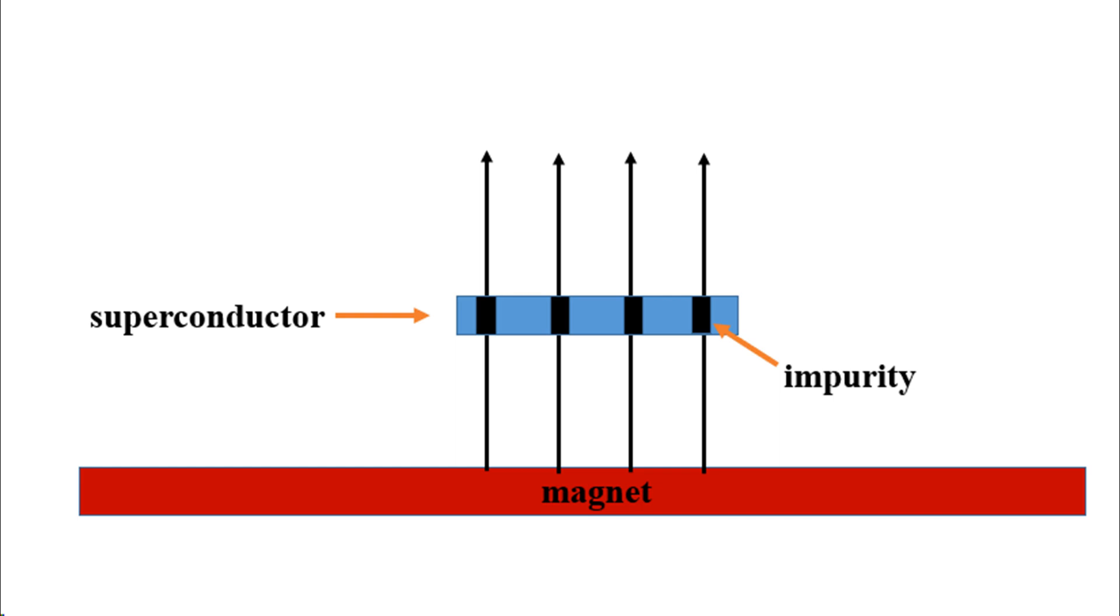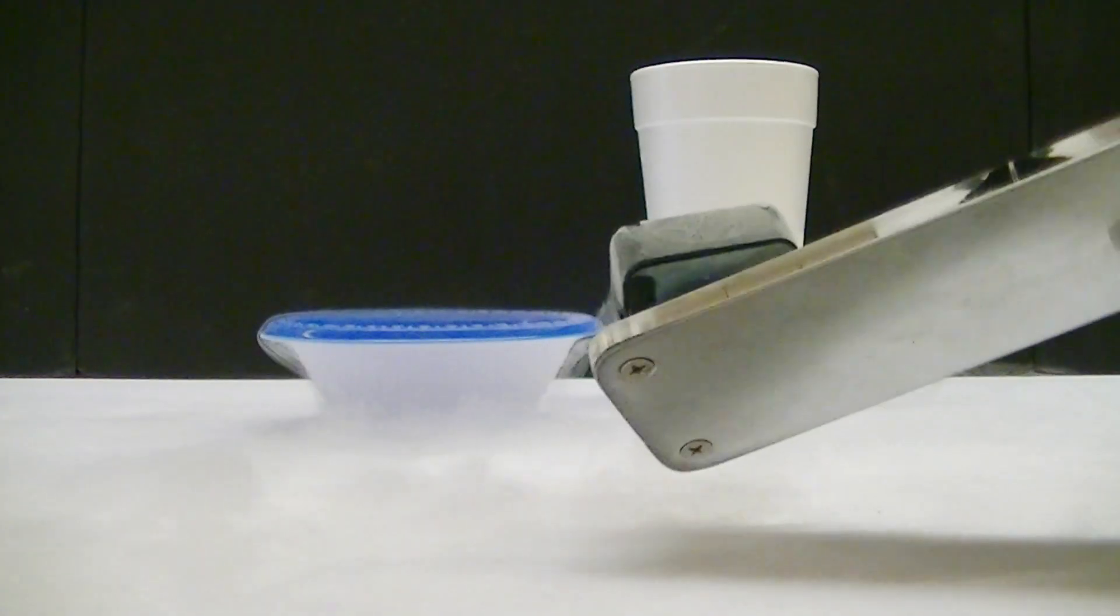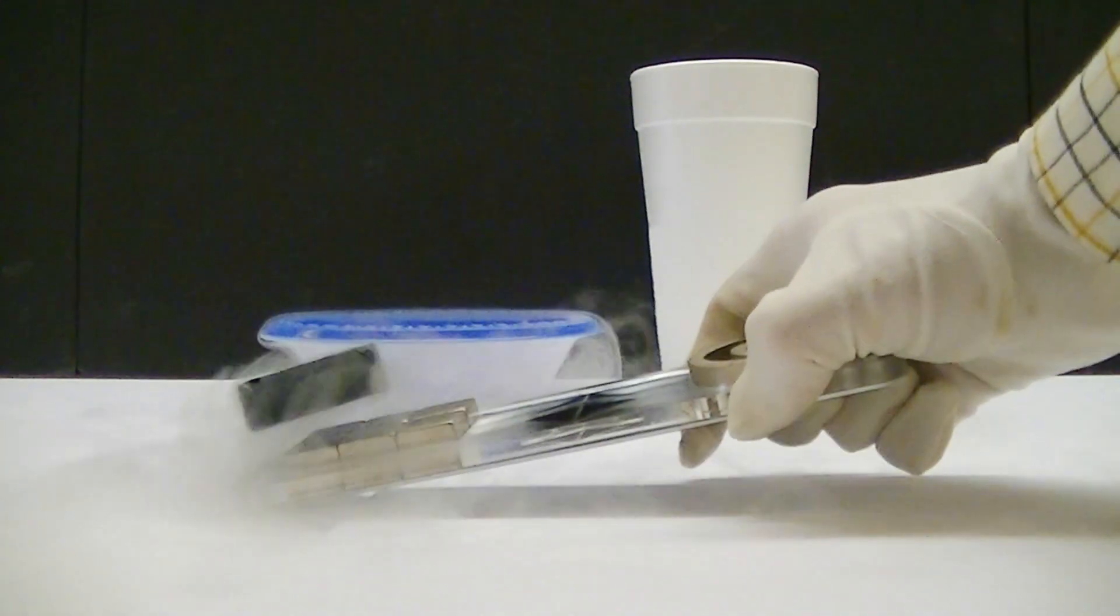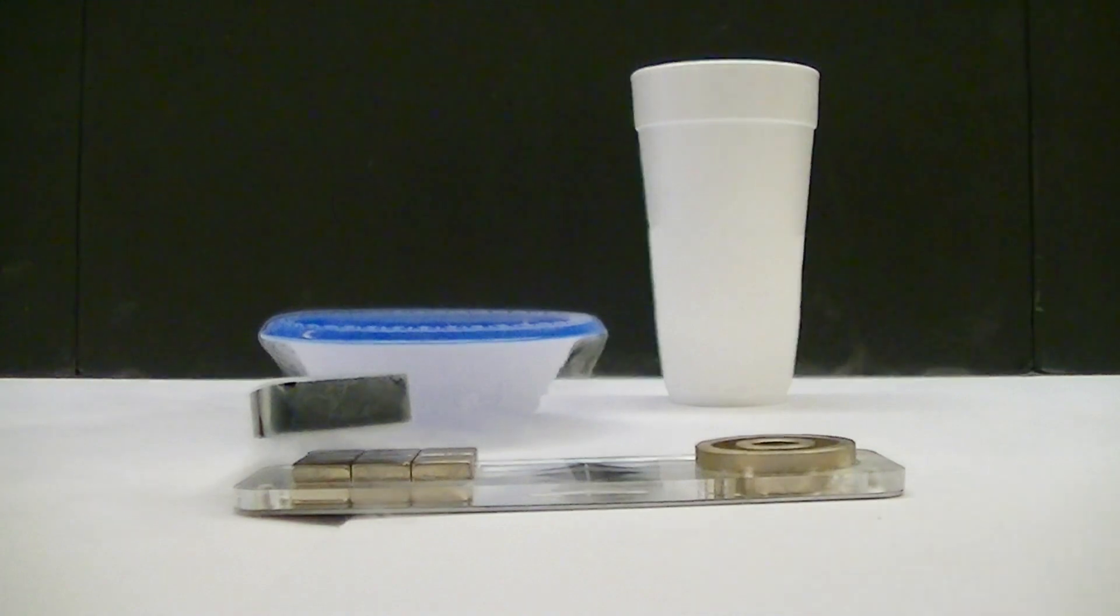Superconductors that contain impurities like this are called type 2 superconductors. Magnetic fields can penetrate type 2 superconductors through the impurities, but only at the impurities. When this happens, a type 2 superconductor becomes locked in a particular orientation when placed in a magnetic field. This is called quantum locking.